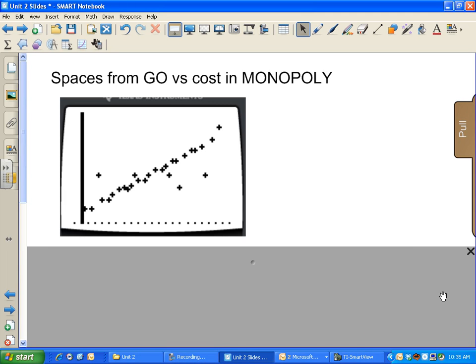All right, so as we start Chapter 8 today, we're going to be specifically talking about linear. So you noticed in our scatter plots, we're looking for shape, and our favorite shape to see will be a line. What I have up here is our scatter plot. It should look familiar. This was the number of spaces from GO in Monopoly versus the cost, and we ended up with this rather strong linear relationship.